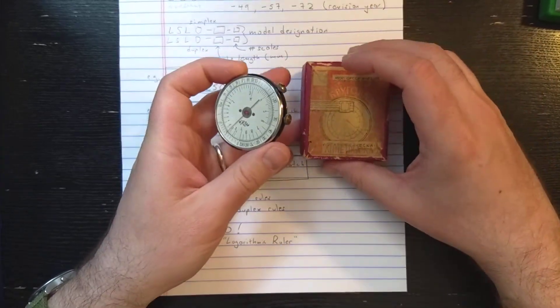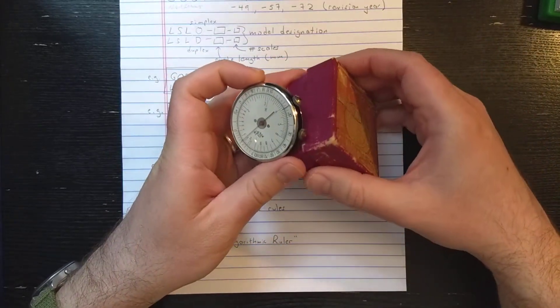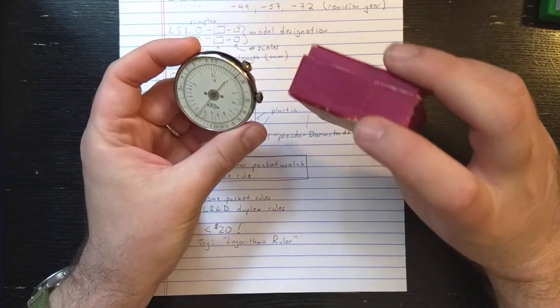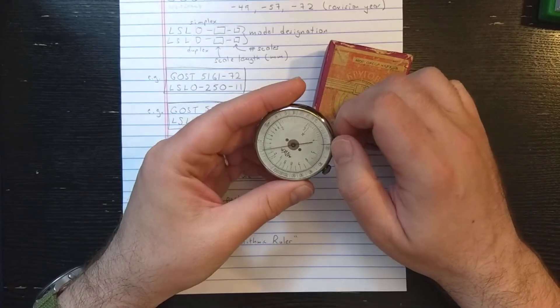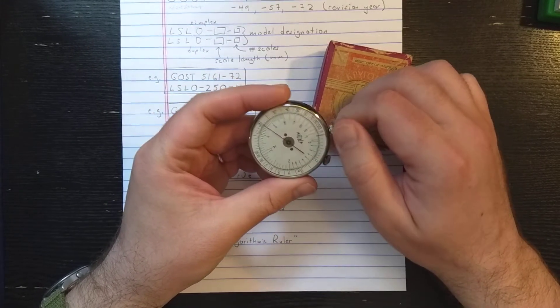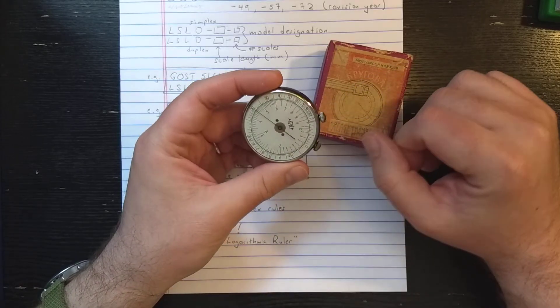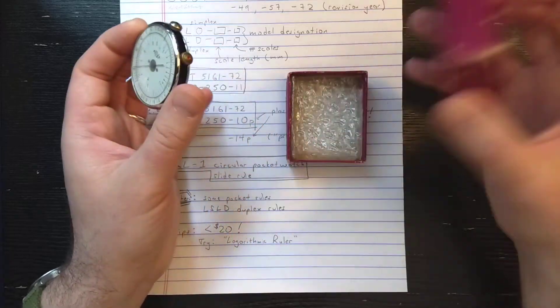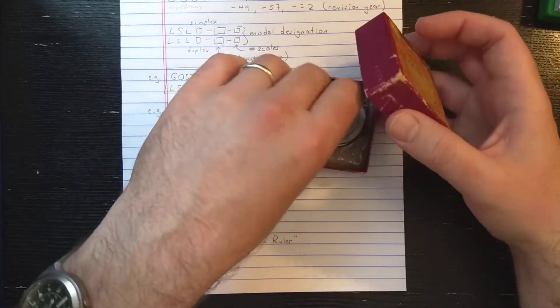The ones made in the other factory sometimes come in a little nice plastic circular case. But these seem to always come in this little box. The KL1 is very popular with collectors, and I have a series of two videos on how to use it, if you're interested in the KL1.